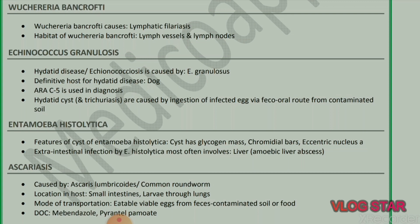Next parasite: Entamoeba histolytica. Features of the cyst of Entamoeba histolytica: cyst has glycogen mass, chromatoid bars, and eccentric nucleus. Extra-intestinal infection caused by Entamoeba histolytica most often involves the liver — amebic liver abscess.